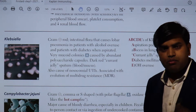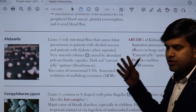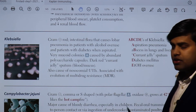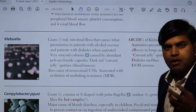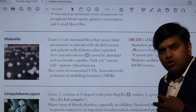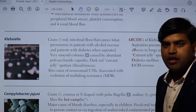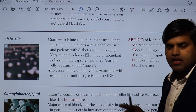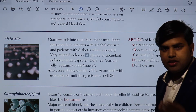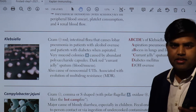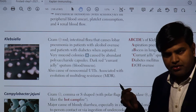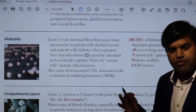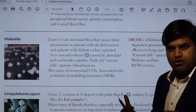Good morning everyone. Today we are moving forward on the USMLE revision Step 1 2021 microbiology section. We previously talked about gram-negative enteric bacteria — specifically the lactose-fermenting gram-negative enteric bacteria remembered by the formula CEEKS: C for Citrobacter, E for Enterobacter, E for E. coli, K for Klebsiella, and S for Serratia.